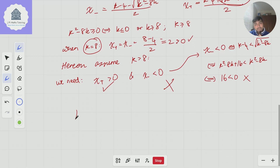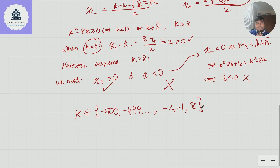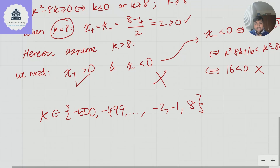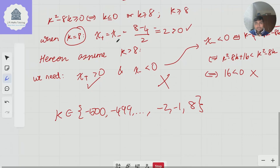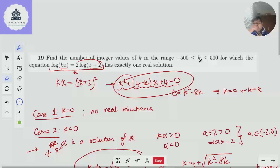Therefore, the values of k which work are −500, −499, all the way to −1, plus k = 8. The final answer — since the question asks how many values of k work — is 501.